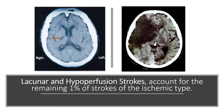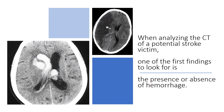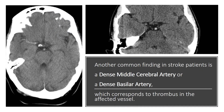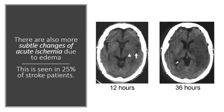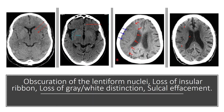Lacunar and hypoperfusion strokes account for the remaining 1% of ischemic strokes. When analyzing the CT of a potential stroke victim, one of the first findings to look for is the presence or absence of hemorrhage. Another common finding is a dense middle cerebral artery or a dense basilar artery, which corresponds to thrombus in the affected vessel. There are also more subtle changes of acute ischemia due to edema, seen in 25% of stroke patients, including obscuration of the lentiform nuclei, loss of insular ribbon, loss of gray-white distinction, and sulcal effacement.